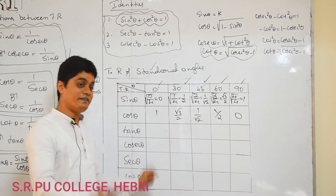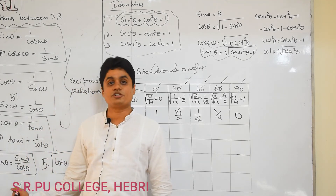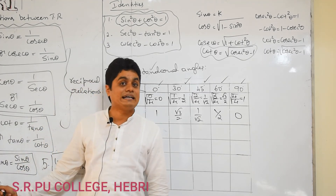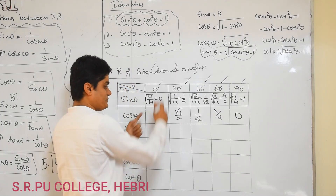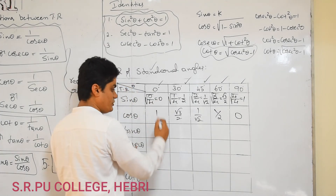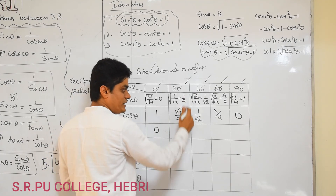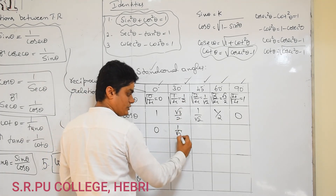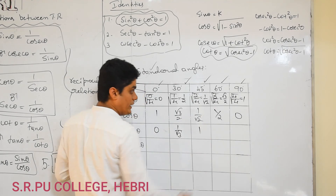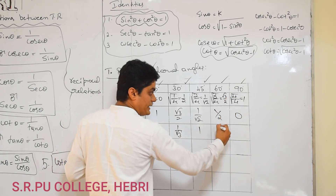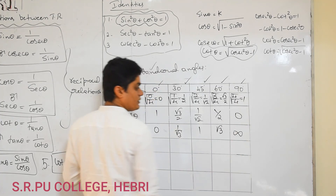The third row is very simple because you know the quotient relation: tan theta equals sin theta by cos theta. Take the quotient — zero by one is zero. The next value from sin by cos gives 1 by root 3. Then one by root two divided by one by root two equals one. Then root three by two divided by one by two gives root three. And one by zero is not defined — not a number, but not defined.